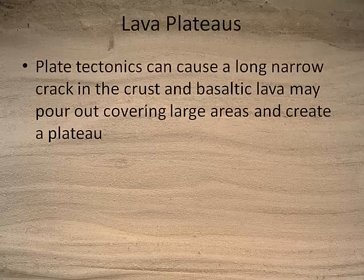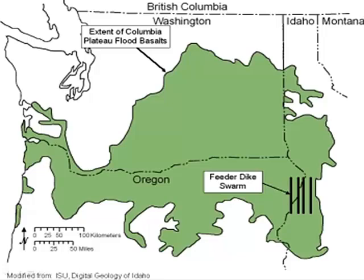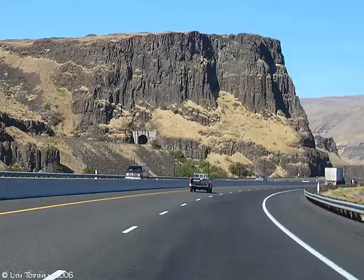Another consequence of volcanic activity are lava plateaus. Sometimes continental plates crack, and magma can escape through those cracks. Instead of forming a volcano, if the lava is very runny — like basaltic lava — it can pour out and run great distances before solidifying, creating a plateau. This happened in the western United States millions of years ago, where a series of cracks allowed basaltic lava to pour forth and cover parts of Idaho, Oregon, and a huge part of Washington. Here's a picture of a highway cut in Washington where this entire cliff is basalt from that ancient lava flow.